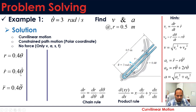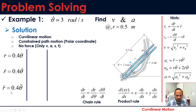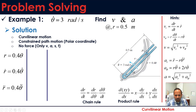For r_double_dot, we take the second derivative of r_dot = 0.4 theta_dot. Using the product rule: r_double_dot = 0.4 times theta_double_dot plus theta_dot times d(0.4)/dt. Since 0.4 is constant, the second term is zero. Therefore r_double_dot = 0.4 times theta_double_dot.